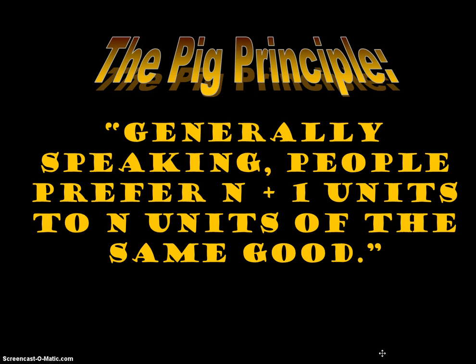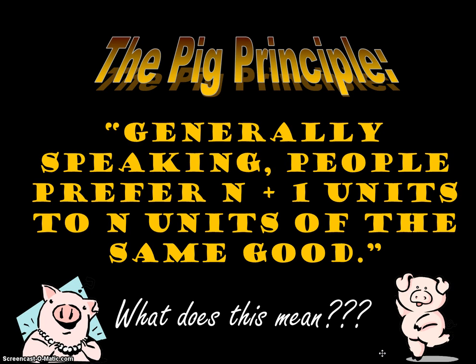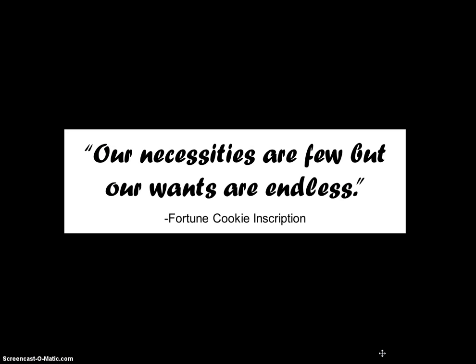This leads us to what we call the pig principle. The pig principle says generally speaking, people prefer n plus 1 units to n units of the same good — meaning people always want more than they have. I was eating at the Mandarin buffet a couple years ago and my fortune cookie said: "Our necessities are few but our wants are endless." That really explains what economics is all about — we always want more.